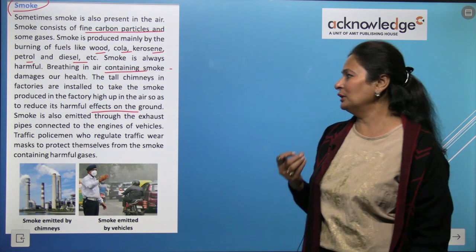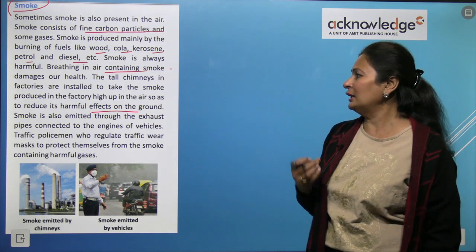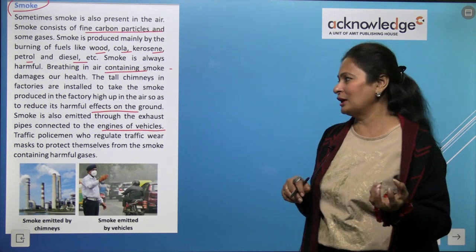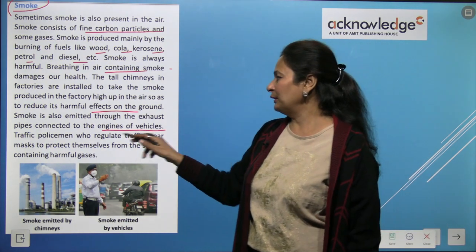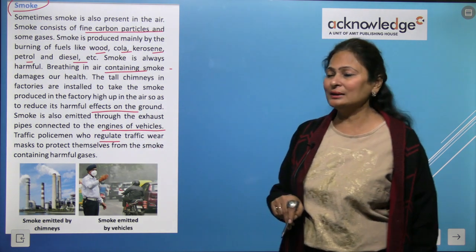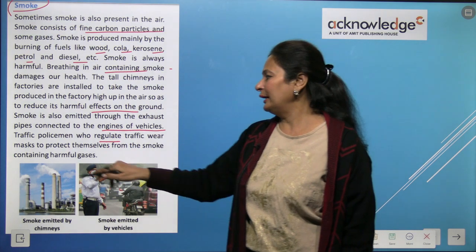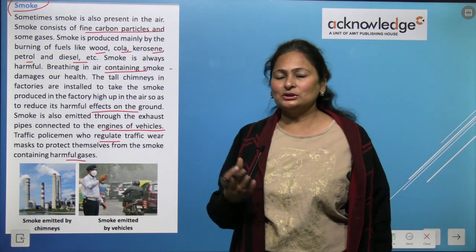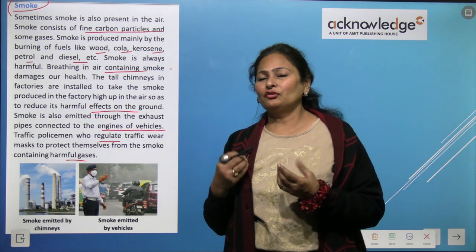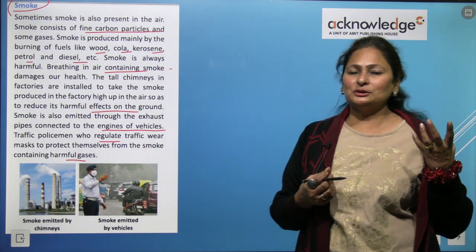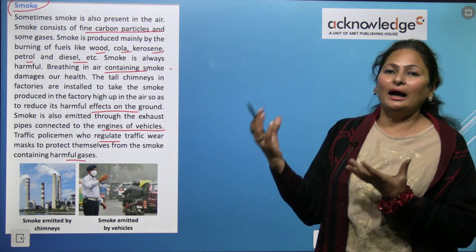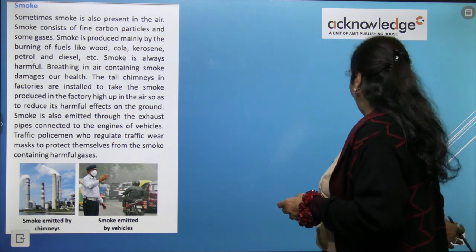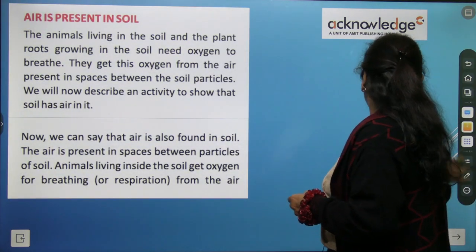Smoke is also emitted through exhaust pipes connected to vehicle engines. Traffic police who regulate traffic wear masks to protect themselves from smoke containing harmful gases. So smoke from both factories and vehicles is mixed into the air.